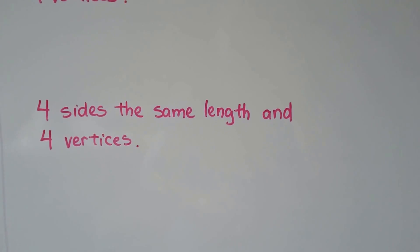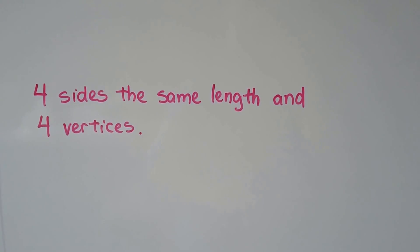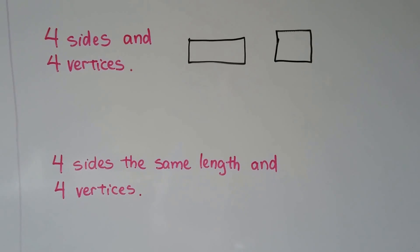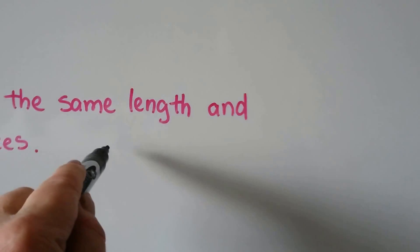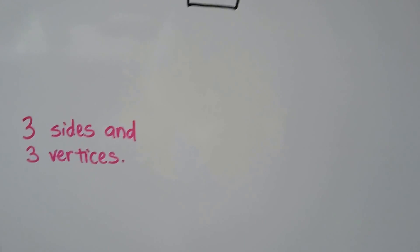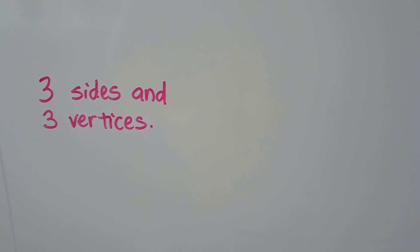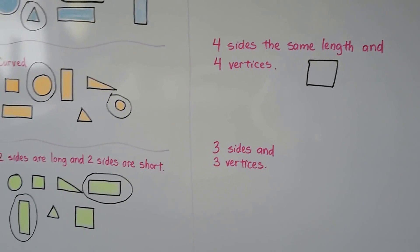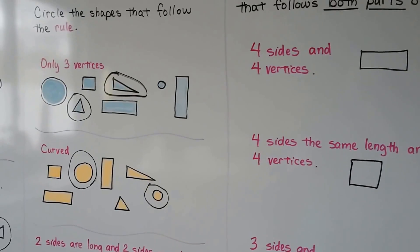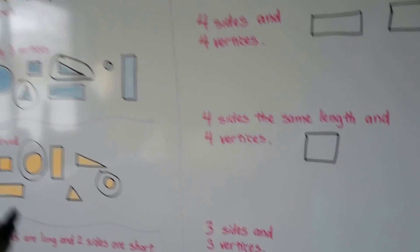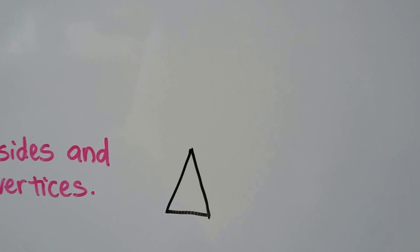How about four sides the same length and four vertices? If the four sides are the same length, it wouldn't be a rectangle — it would be a square. What about three sides and three vertices? A triangle has three vertices and three sides, so we could draw a triangle. That follows both rules.